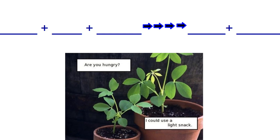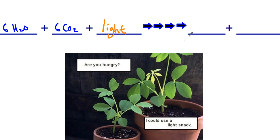We know that photosynthesis is the ability for plants to take in light energy. That light energy is going into breaking bonds — specifically the bonds of 6 moles of water and 6 moles of carbon dioxide. It's going to break those bonds and make sugars, which is C6H12O6, simple sugars, and 6 moles of oxygen gas. That is the overall chemical reaction of photosynthesis.